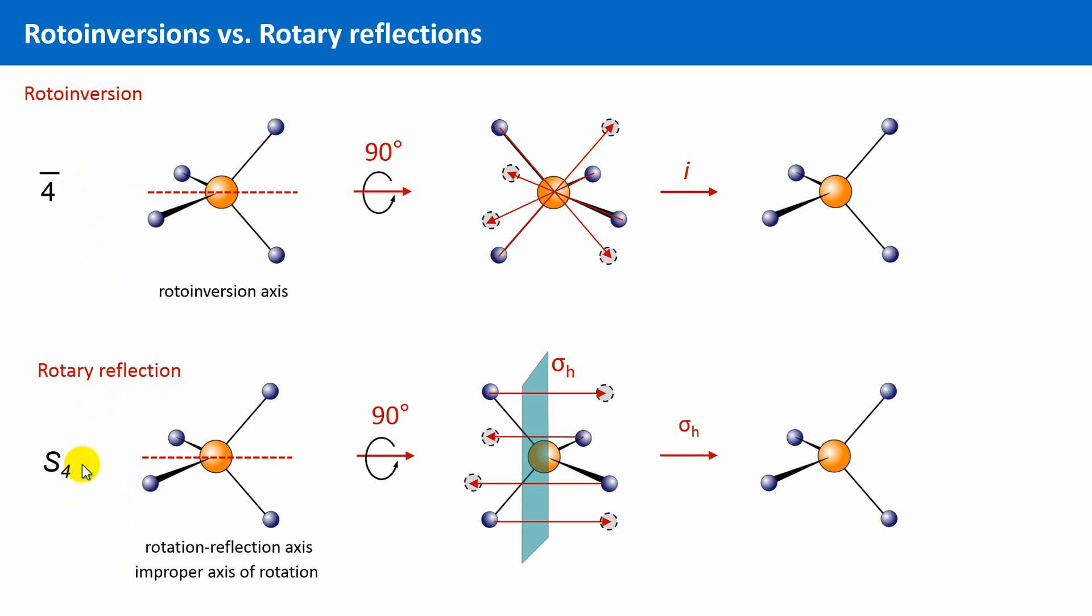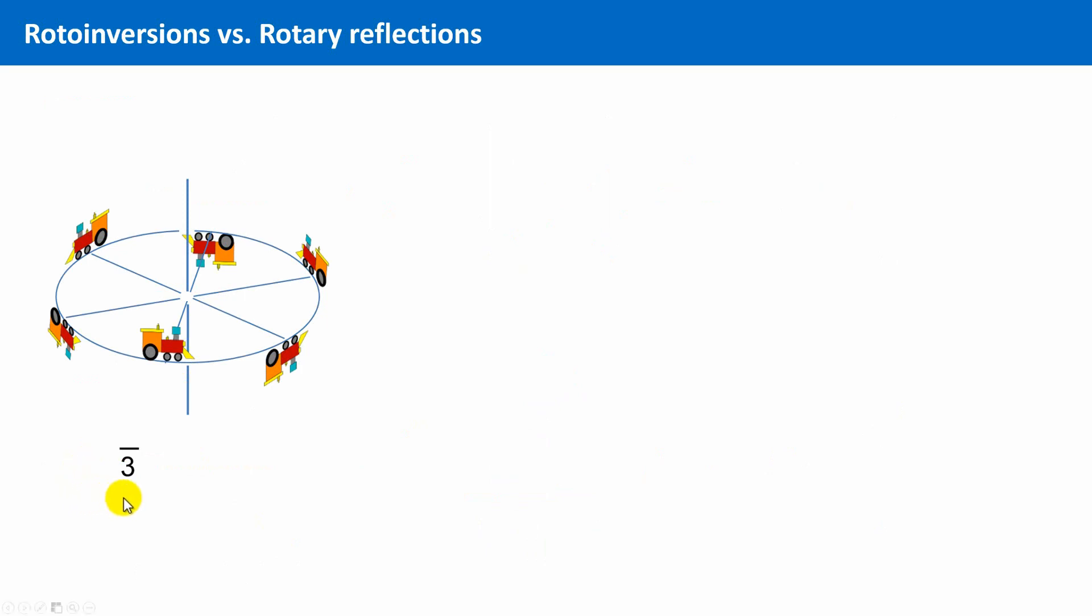Let's look at another arrangement of objects, which possesses rotational inversion or rotational reflection symmetry, respectively. This arrangement of locomotives. This arrangement has a 3-bar, thus a 3-fold rotoinversion axis. Let's reproduce this. First, we have to rotate the locomotives by 120 degrees. So, this locomotive comes over here, and then we have to carry out an inversion. Indeed, this is a symmetry operation, as you can see. We can take another locomotive. Rotation by 120 degrees, inversion, and so on.